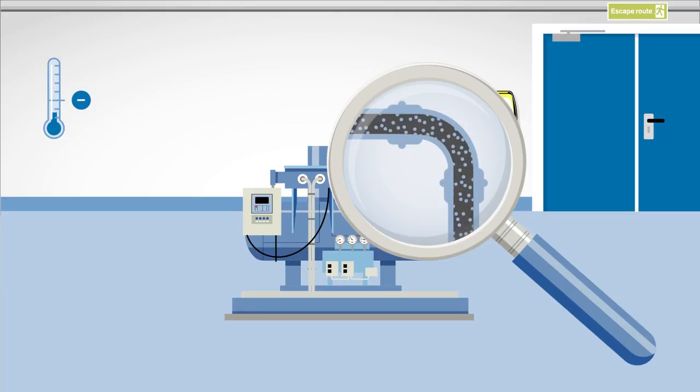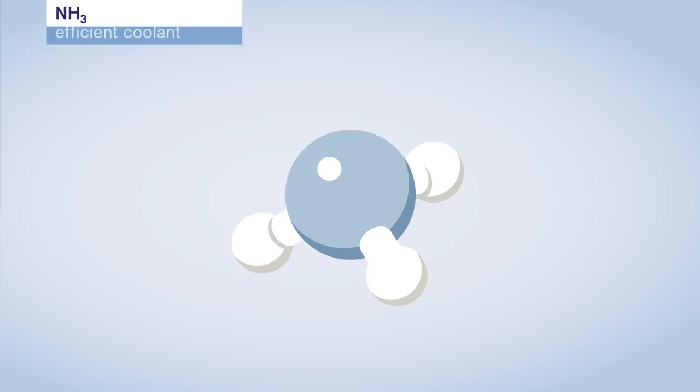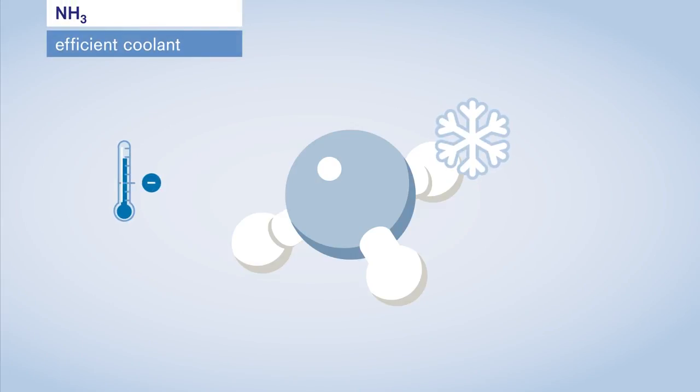In refrigeration plants, ammonia, or NH3 for short, is mostly used as the coolant. It is an efficient coolant, thanks to its thermodynamic properties, which allow it to generate cooling powers with an extremely low energy consumption.